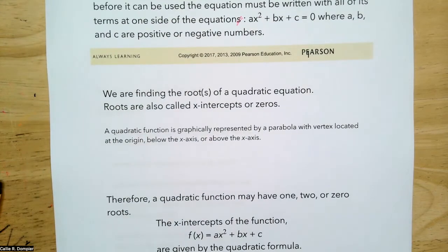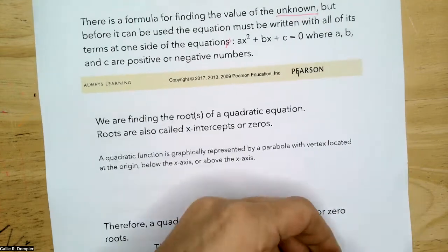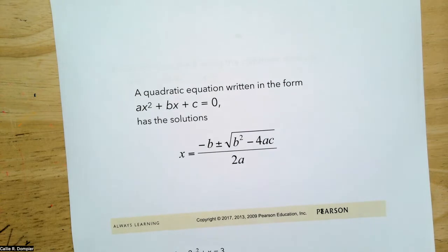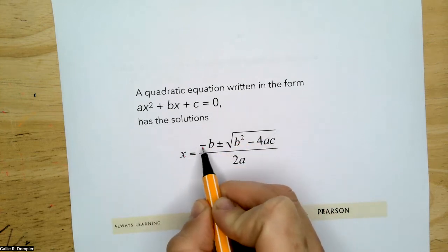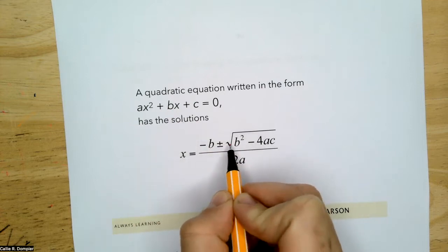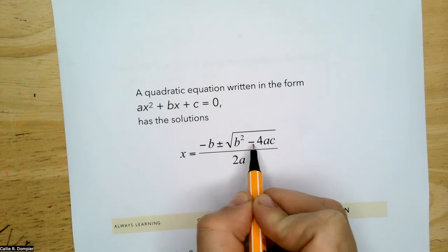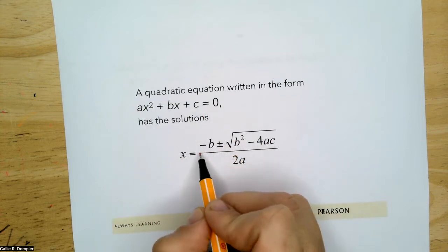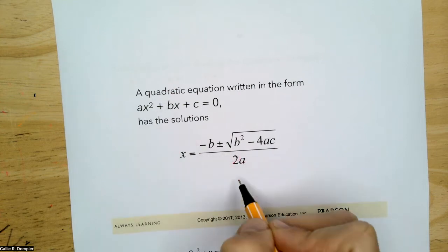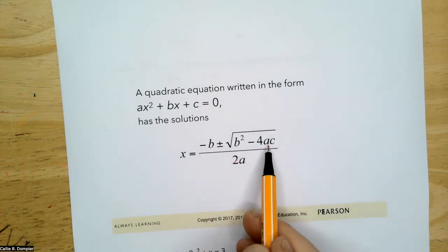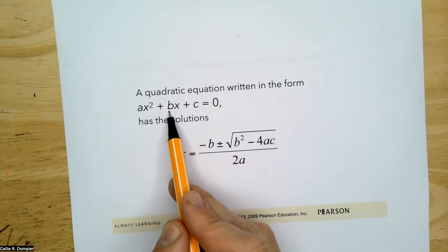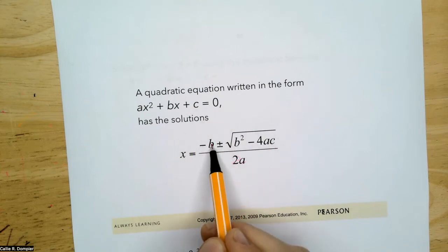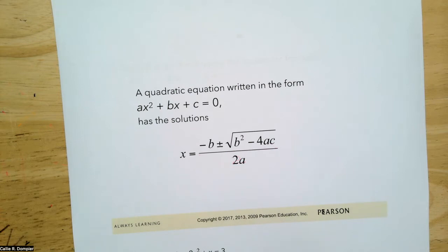Here's the quadratic formula. A quadratic equation written in the form ax squared plus bx plus c equals zero has the solutions x equals negative b plus or minus the square root of b squared minus 4ac, divided by 2a. So when you see a, b, and c, we're plugging in the coefficient of x squared, the coefficient of x, and the constant.